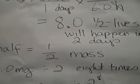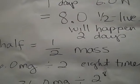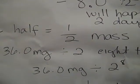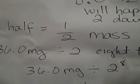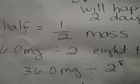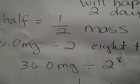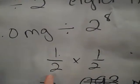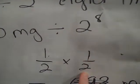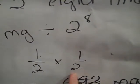So, we could also just do 36.0 milligrams divided by two to the eighth power. That's because, if I had something that was like one-half times one-half, I'm dividing by a half over and over again, multiplying by 0.5 over and over again.